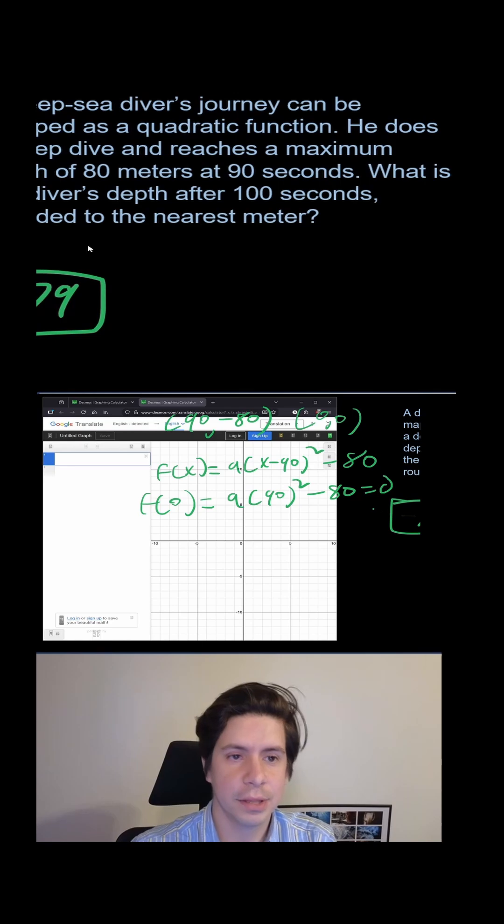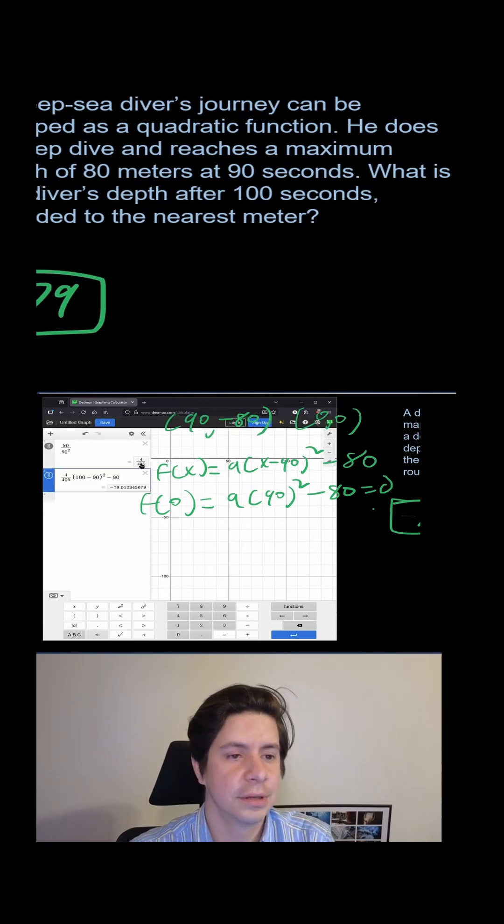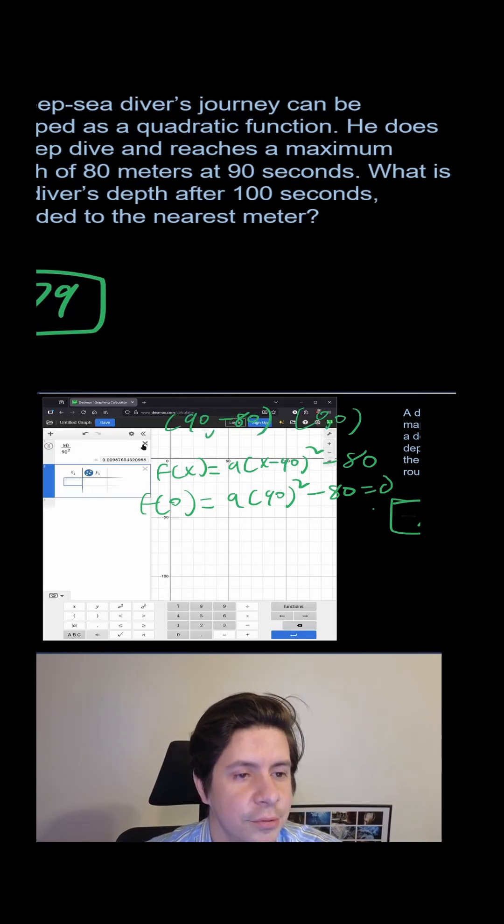Another way to do it is to do it almost purely with Desmos using the function, the tables again. So you'll do a table, get rid of this.